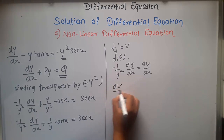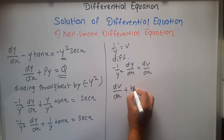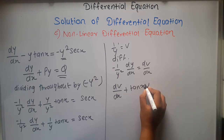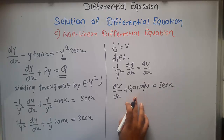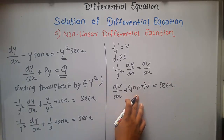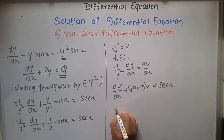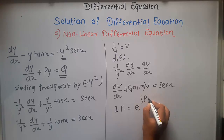Substituting, the equation becomes dv/dx + tan(x)·v = sec x. This is now in linear differential equation form. To solve it, we first find the integrating factor, which is e^(∫P dx).